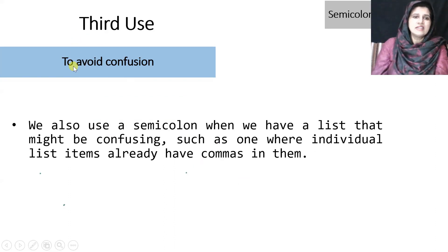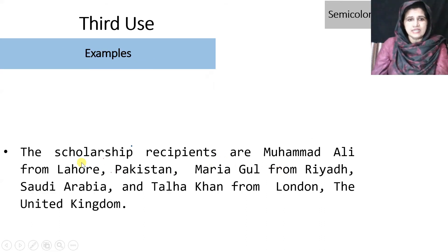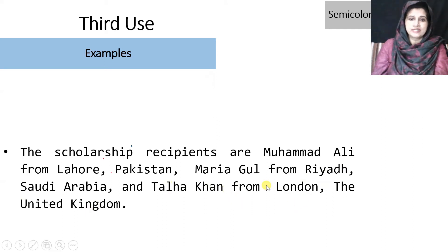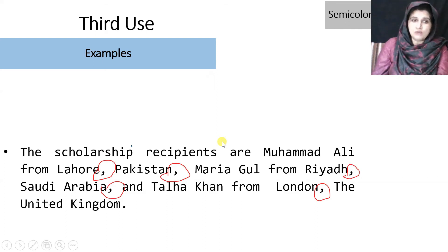The third use: semicolons help us avoid confusion. We use a semicolon when we have a list that might be confusing — such as one where individual list items already contain commas. For example: 'The scholarship recipients are Muhammad Ali from Lahore, Pakistan, Maria Gulf from Riyal, Saudi Arabia, and Talha Khan from London, the United Kingdom.' There are so many commas here that it can be very confusing for the reader.